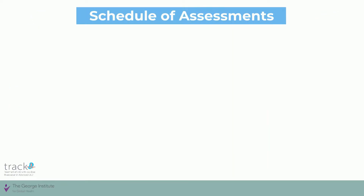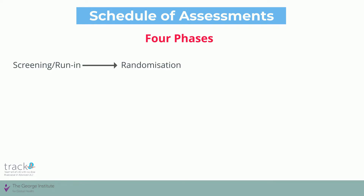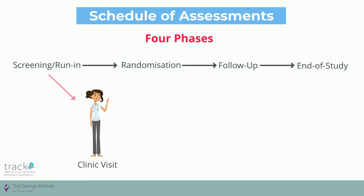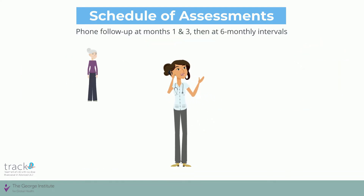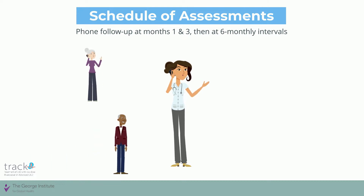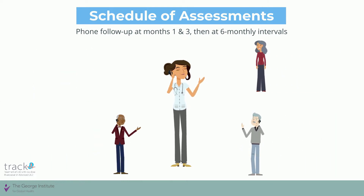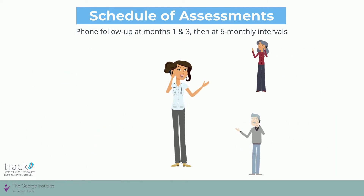The study schedule has four phases: screening or run-in, randomization, follow-up, and end of study. Clinic visits are required at screening and randomization and then every six months until the end of the study. Telephone contact with participants will also be required as part of follow-up and the end of study.